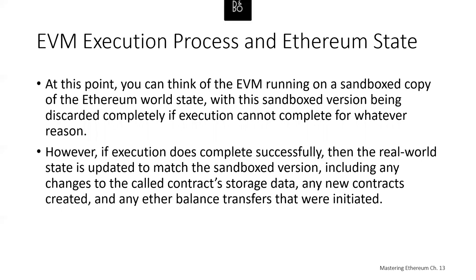Because a smart contract can itself initiate transactions, code execution is a recursive process. A contract can call other contracts, with each call resulting in another Ethereum virtual machine being instantiated around the new target of the call. Each instantiation has its sandbox world state initialized from the sandbox of the calling EVM. Each instantiation is also given a specified amount of gas for its gas supply, not exceeding the amount of gas remaining, and so may itself halt due to being given too little gas to complete its execution. If that happens, the sandbox state is discarded and execution returns to the calling Ethereum virtual machine.